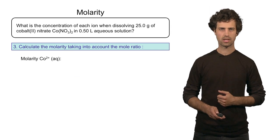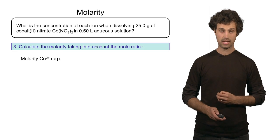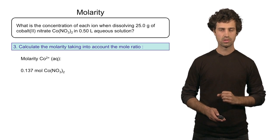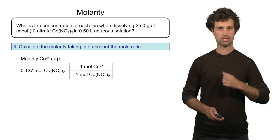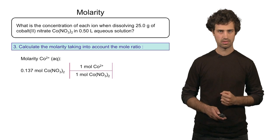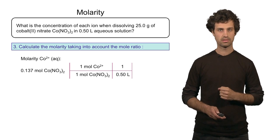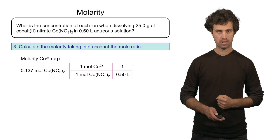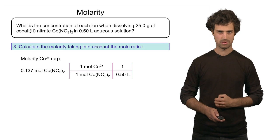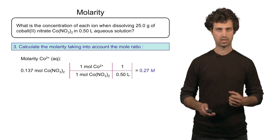Let's start with the cobalt cations. The molarity of the cobalt cations is the number of moles of the compound times the mole ratio to determine how many cations are generated upon dissolution — that is one to one — then divided by the total volume of the solution, which is 0.5 liters. The molarity is therefore 0.27 molar of cobalt cations.